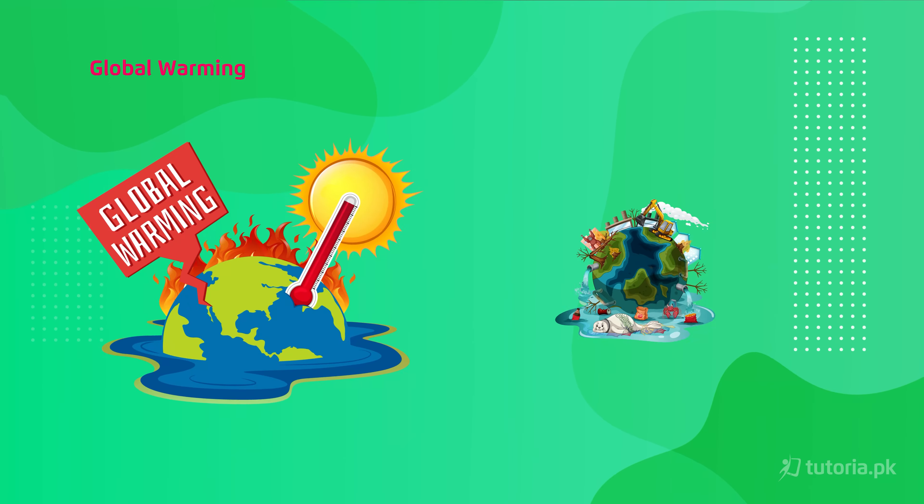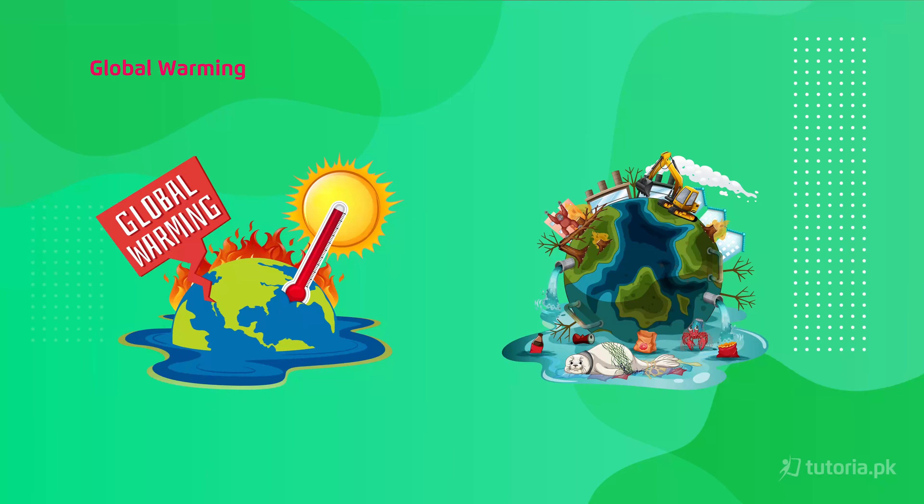Our ecosystem has a balance maintained, but human impact has disturbed that balance. The first human activity disturbing the balance is global warming — gases which are harmful to the environment, such as carbon dioxide, methane, and carbon monoxide, cause the temperature to increase. The problems we face include rising Earth temperatures, increasing sea water levels, and melting glaciers. So global warming is a very serious issue.